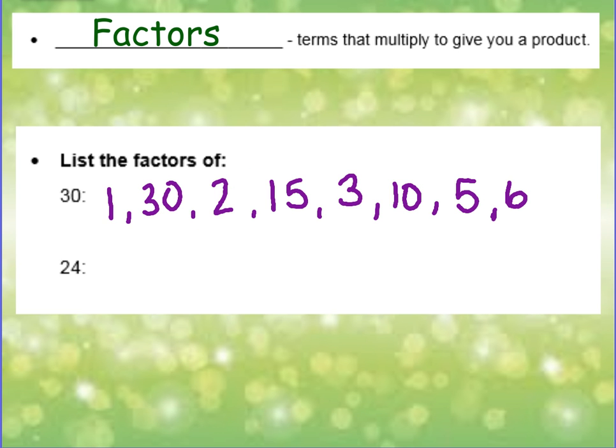Let's do the same thing for 24. 1 and 24 can give you a product of 24. 2 and 12. And if you're not sure, remember you can use your calculator and use division to check to see if a number can go into a number like 24. 3 and 8. 4 and 6. And 5 cannot go into 24 evenly, so we are done. Here we have our unorganized list of factors.